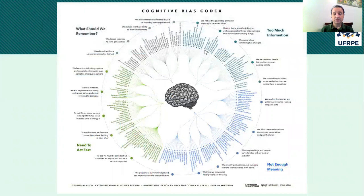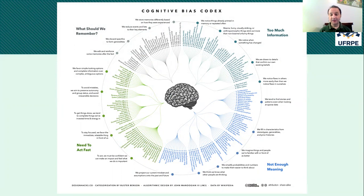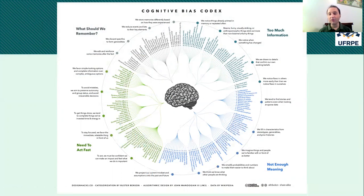When we talk about cognitive biases, the most fascinating figure, in my opinion, is the one right in front of you. What you see there is like a codex — a compendium, a manual of cognitive biases. Wikipedia gathered all of these cognitive biases in a list. What you have here is a diagram showing you all of these cognitive biases in one single image.